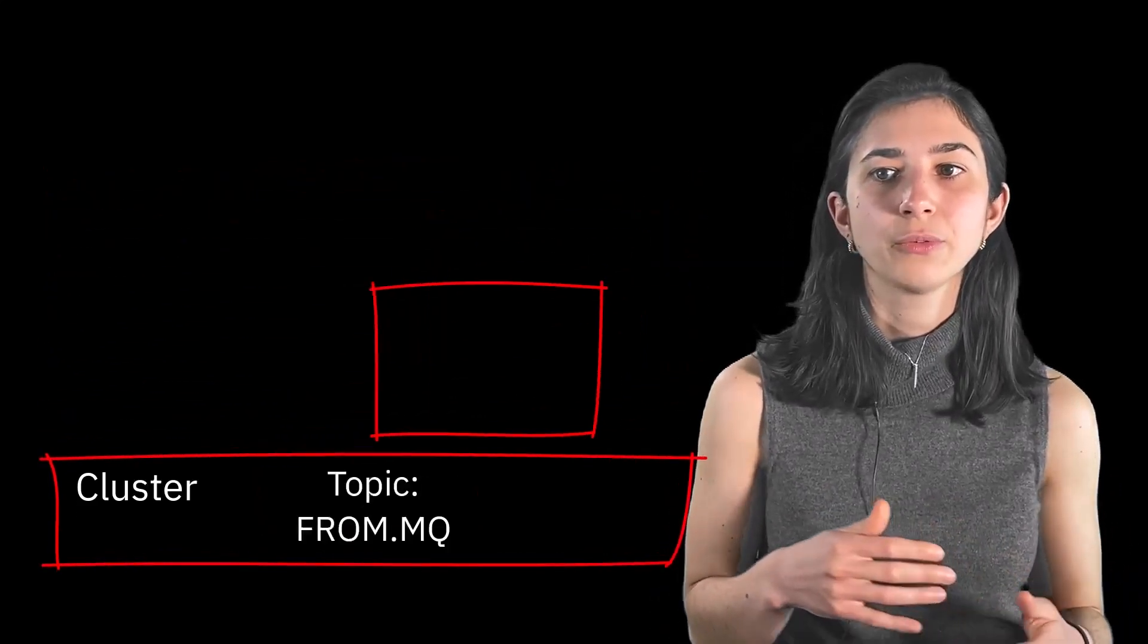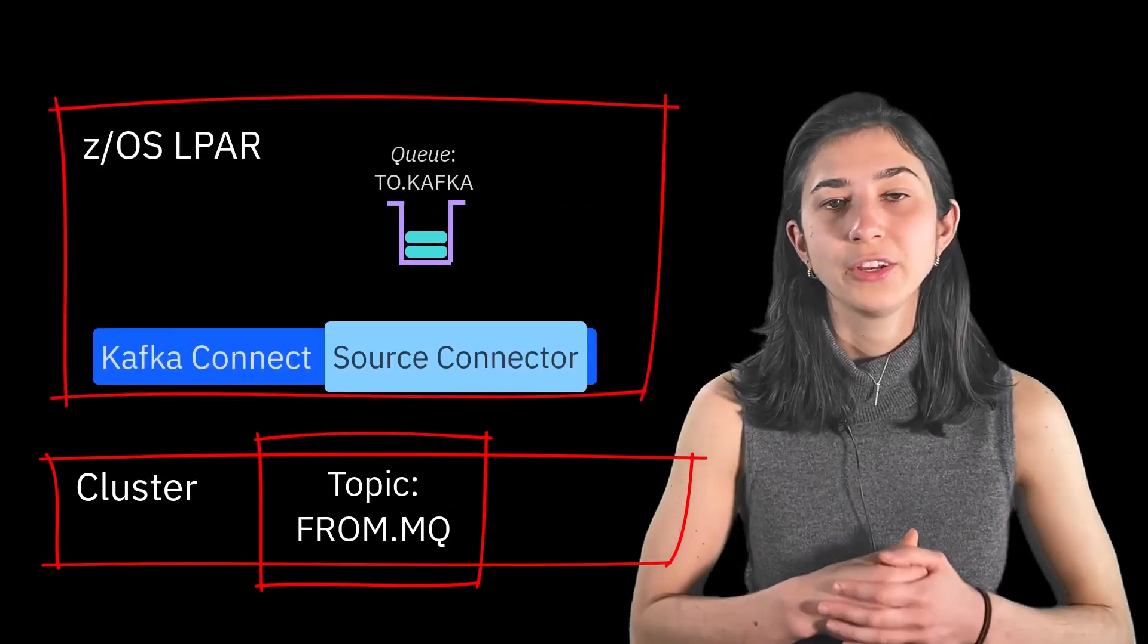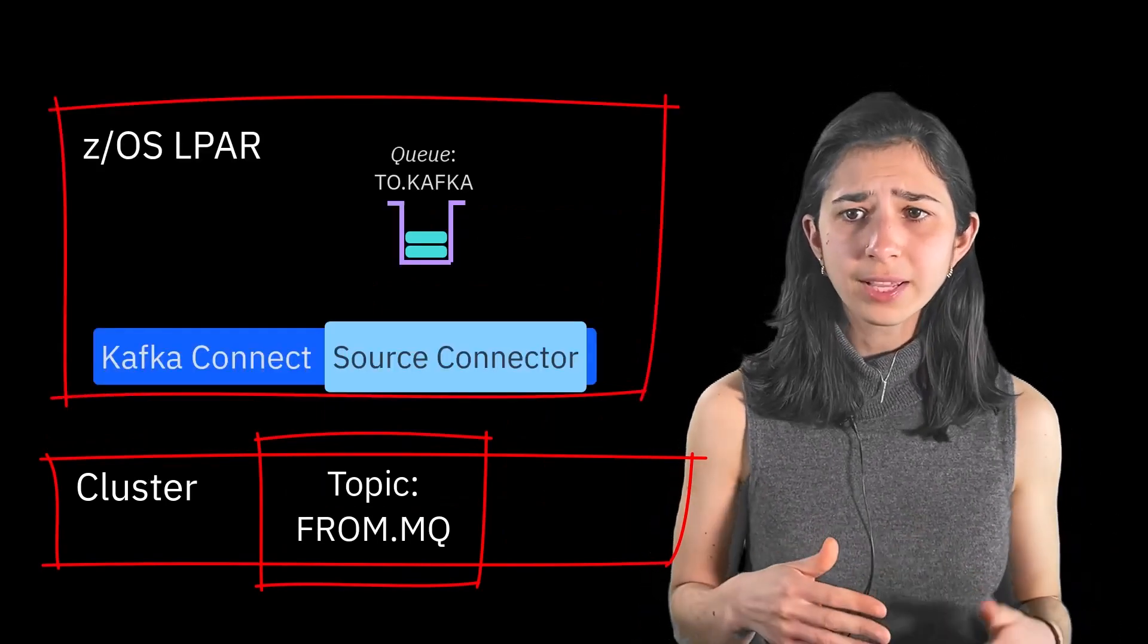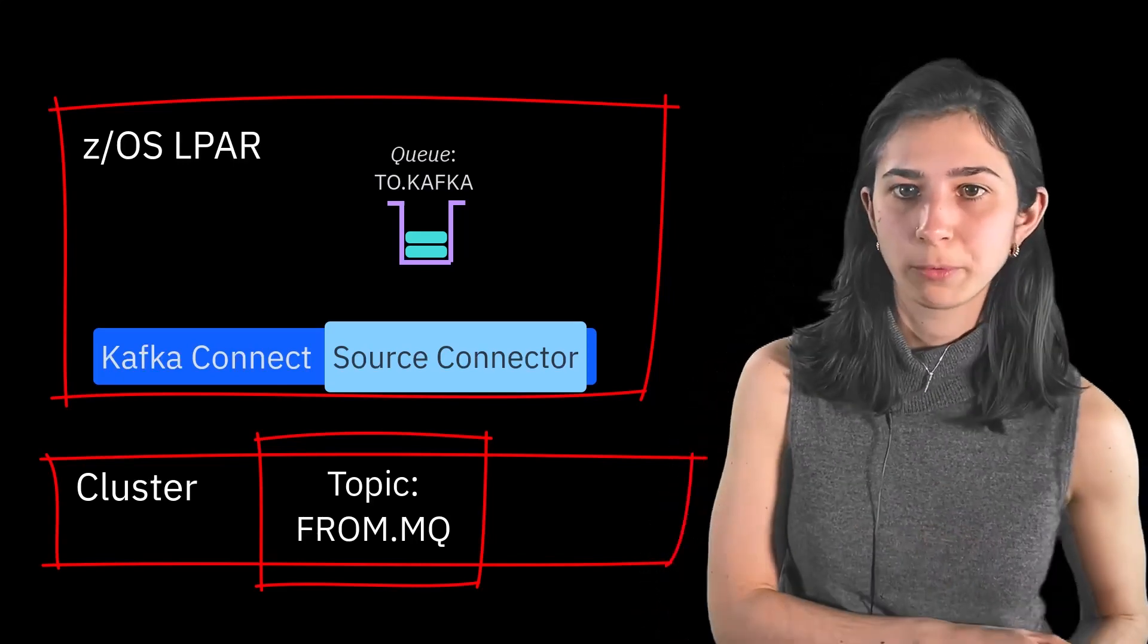With the Kafka connector running on z/OS, data can be passed between MQ subsystems and your Kafka clusters. The Kafka connector does not need to be run on the same server as the Kafka broker it's utilizing.